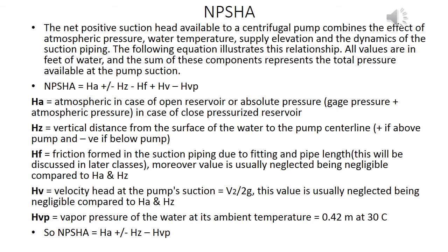HA equals atmospheric pressure for an open reservoir, or absolute pressure (gauge pressure plus atmospheric pressure) for a closed pressurized reservoir. HZ equals the vertical distance from the water surface to the pump centerline — positive if above the pump, negative if below. HF equals friction losses in the suction piping due to fittings and pipe length (usually neglected as negligible). HV equals velocity head at pump suction = V² / 2g (also usually neglected). HVP equals vapor pressure of water at ambient temperature, equal to 0.42 meters at 30°C. Therefore: NPSHA = HA ± HZ − HVP.